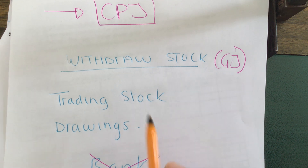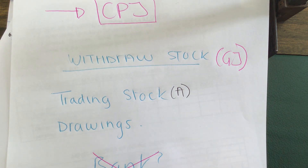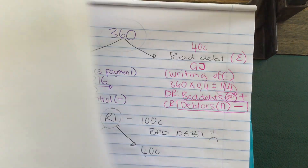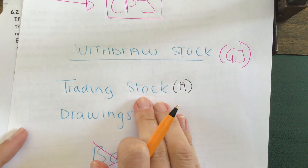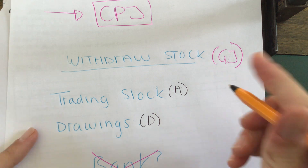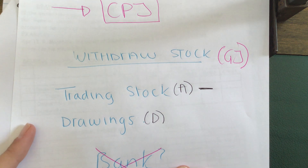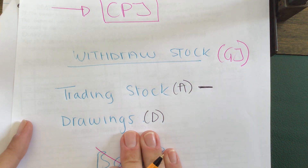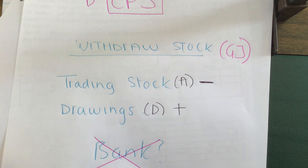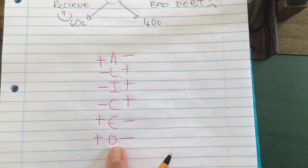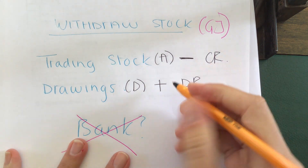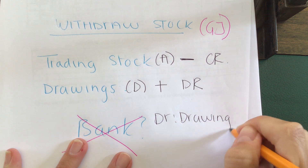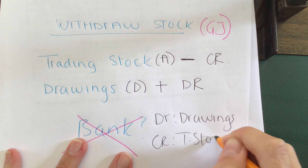We classify the accounts: trading stock is an asset, and drawings is the D in ALIST. What's happening to our trading stock? If the owner is withdrawing the stock, the trading stock amount is decreasing. What is happening to drawings? The drawings amount is increasing. So using ALIST: asset minus means credit, and drawings plus means debit. We need to debit drawings and credit trading stock.